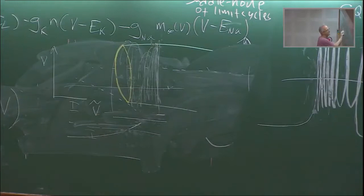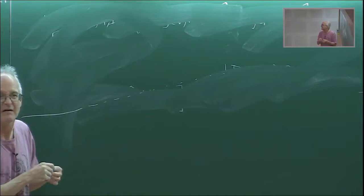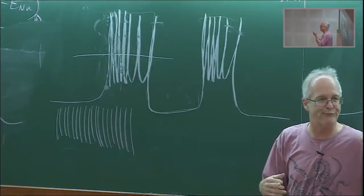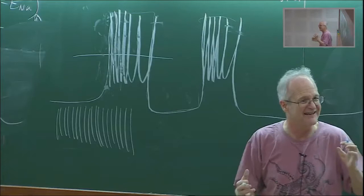A student asks: what is the difference between bursting and spiking? Repetitive spiking is just constant periodic spiking all the time. Bursting has gaps. So one is regular spiking and the other has pauses in between. The transition from bursting to repetitive spiking is very complicated — you get very aperiodic, chaotic motion there.